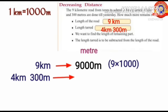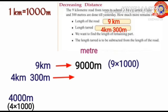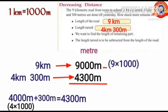Next, convert four kilometers and 300 meters into meters. To convert four kilometers into meters, multiply one thousand with four: four into one thousand equals four thousand meters. Adding 300 meters gives four thousand three hundred meters. Now subtract: we can't subtract 3 from 0, so borrow 1 from 9. Zero becomes 10, and 9 becomes 8.